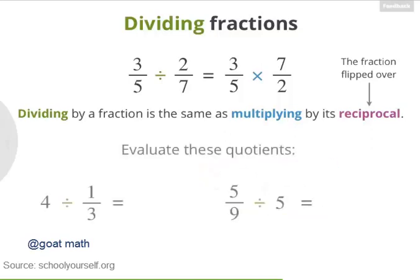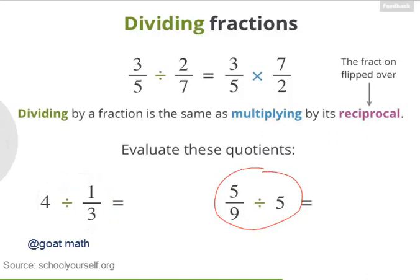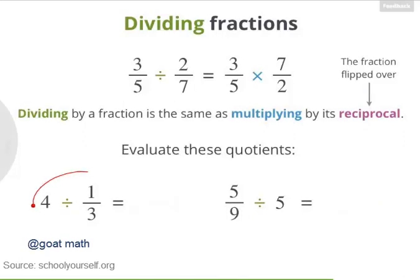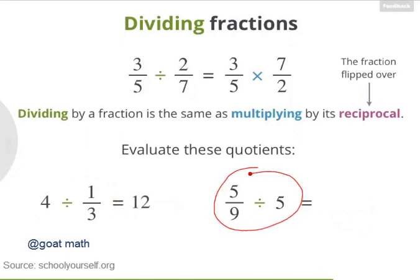Try a few more examples with fractions and whole numbers. What's 4 divided by 1 third and 5 ninths divided by 5? Great! So 4 divided by 1 third is 12 divided by 1, or 12. And 5 ninths divided by 5 equals 1 ninth.